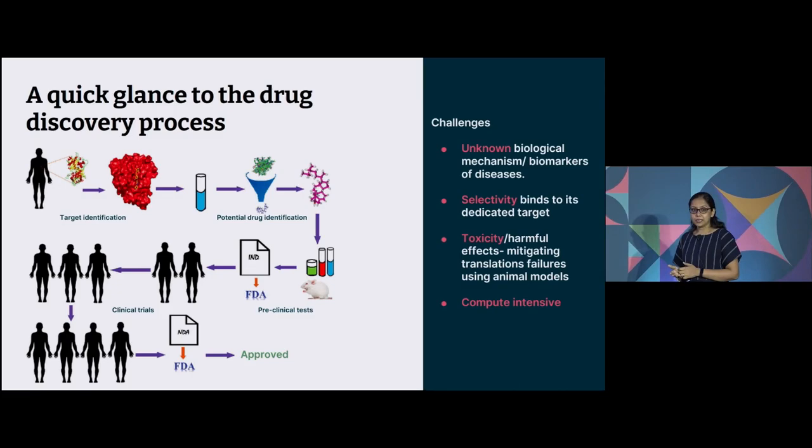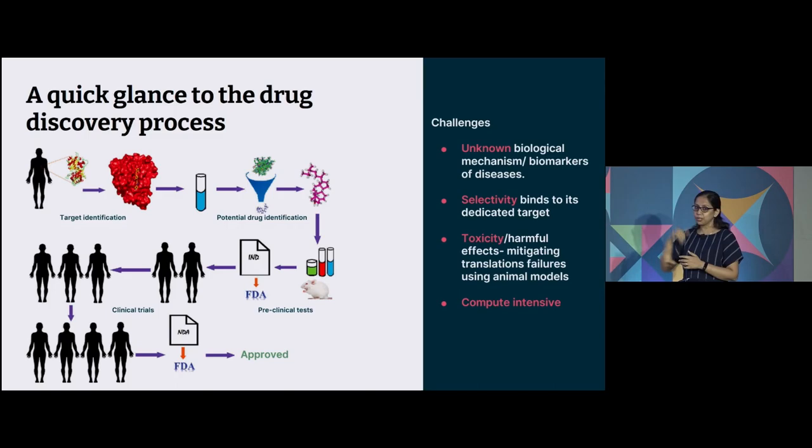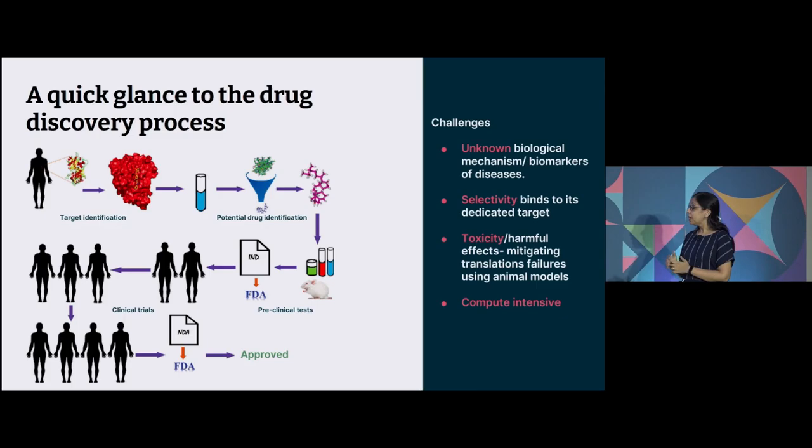Some of the challenges that we usually deal with is the unknown biological mechanism. So even when you identify the target, there are a lot of biological mechanisms that you need to understand before you can really define that this is the drug that is going to work on this target. The selectivity of the drug target complex: it has to bind to the right place and in the right pose. If it just goes and binds somewhere else, will it produce the effect? No. Will it be harmful? Maybe. Toxicity, we just spoke about that you don't want it to be toxic or impacting any other area of the body. And along with that, there are a lot of challenges around something works in the animal model, but when it goes to the human model, it again fails, and the cycle repeats. All of these processes are very compute intensive.